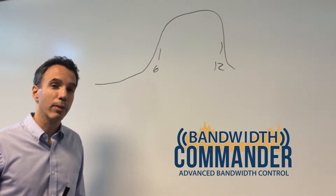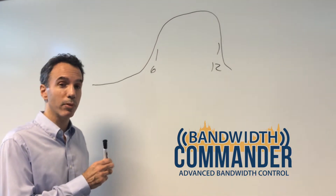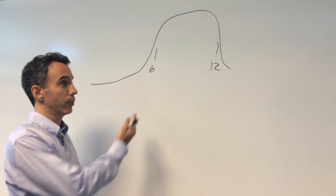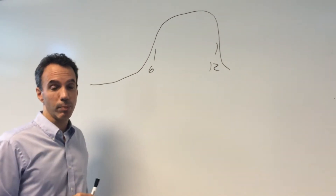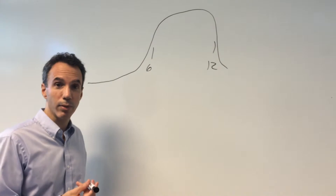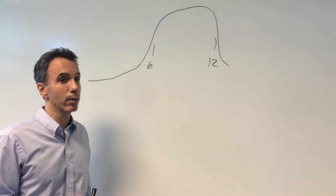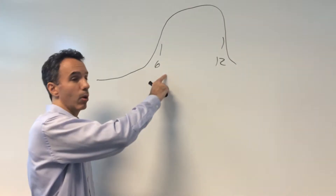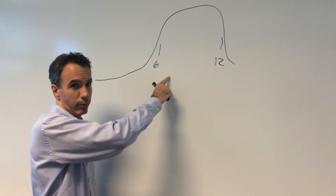That's where Bandwidth Commander comes in. Not only can you set a monthly quota, but you can also specifically set your peak usage hours — for example, 6 to midnight. That way you can track bandwidth and apply policies at any time during the month, regardless of what day it is. Plus, you can drill down and set small slices of time where you're going to actually assign a quota.